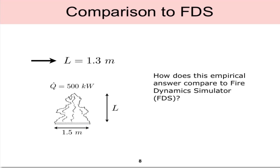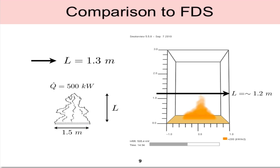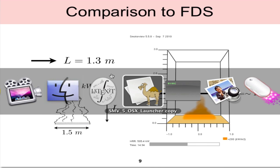Now that we have that solution, we can ask how does this empirical answer compare to a simulation from Fire Dynamics Simulator or FDS? Is FDS able to predict the correct flame height, and how do those answers compare to our empirical answer? I created an FDS simulation which I'll show here.